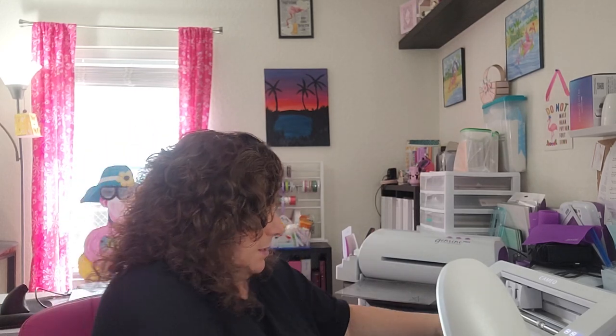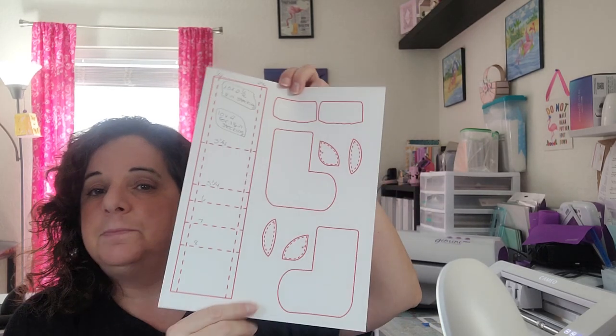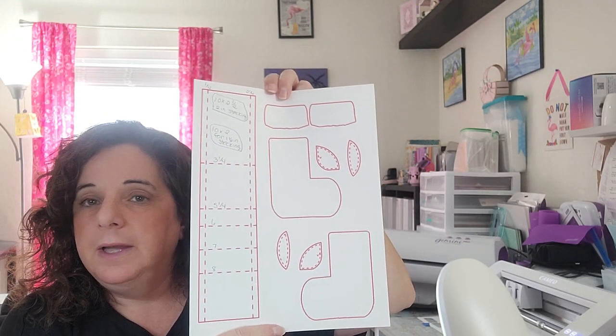But there is a template and there is an SVG. The template has all the pieces you need. You just cut them all out. If you have the ability to cut out an SVG, then just download the SVG from the website and you can have the machine cut it out for you. So let me get this camera turned around and we will get started.